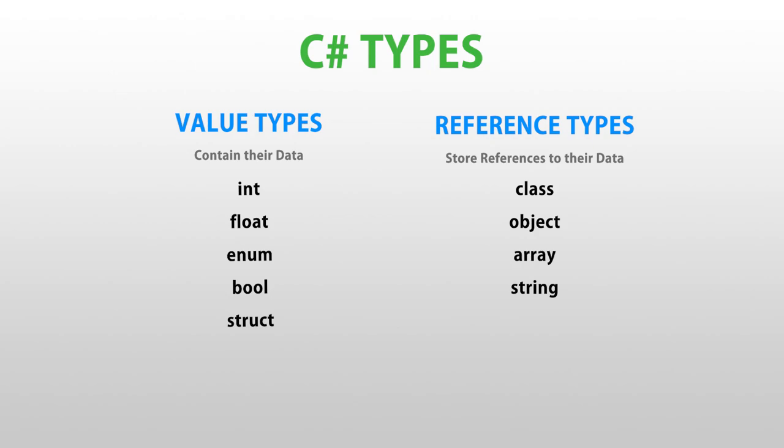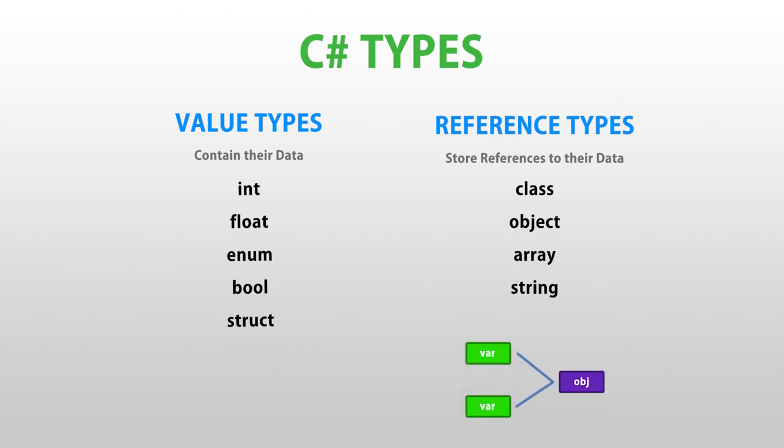With reference types, you can have multiple variables holding references to the same exact object. Whereas with value types, each time you do an assignment, you are making a copy of the underlying data.